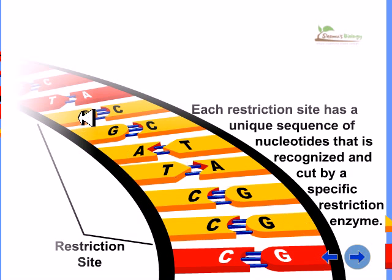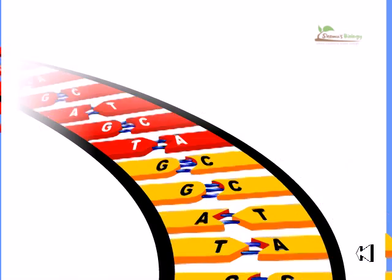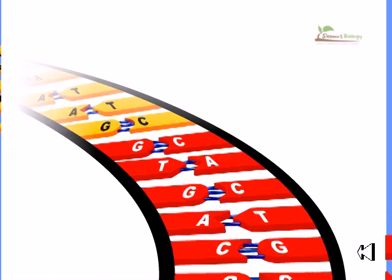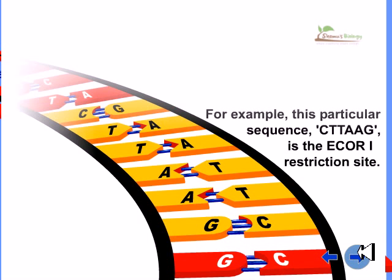For example, here we are having GGATCC and a particular restriction enzyme will cut into a particular location. For example, the particular sequence CTTAAG is the ECO-R1 restriction site.